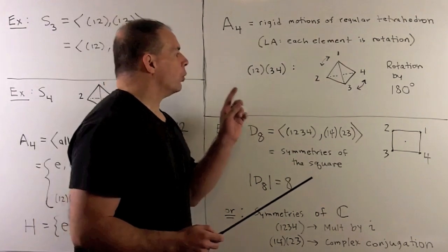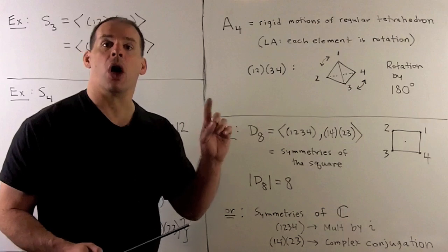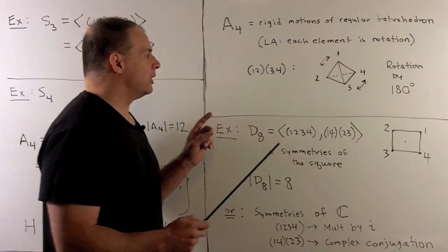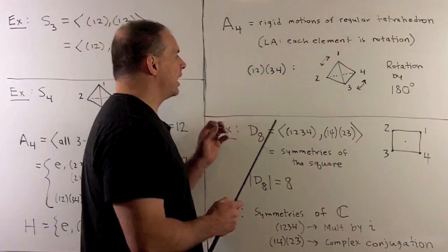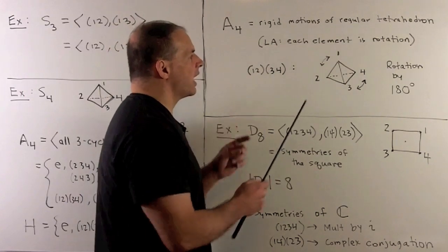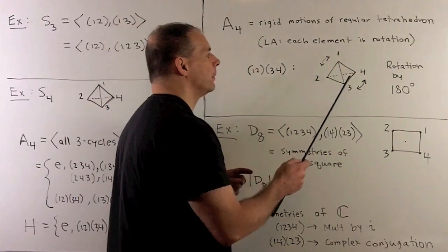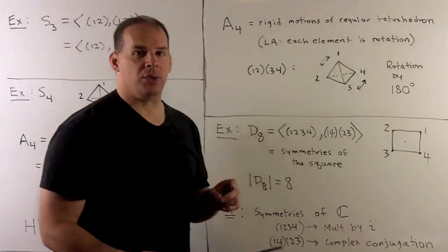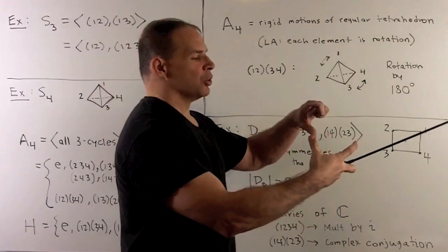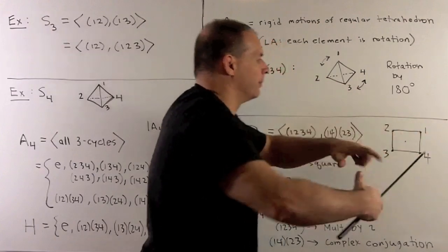We also want to identify the products of disjoint 2-cycles as rotations. Take (1 2)(3 4): this switches 1 and 2 and also switches 3 and 4. We can achieve this by rotating 180 degrees, with the plane of rotation coming out of the board.